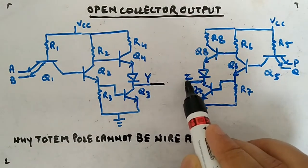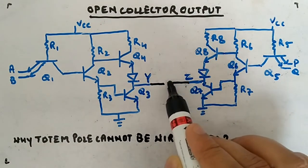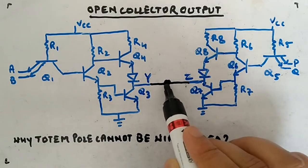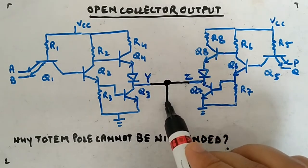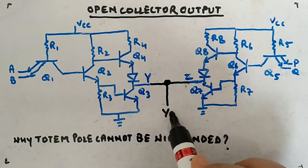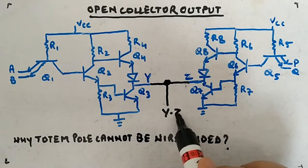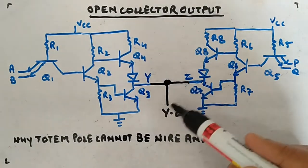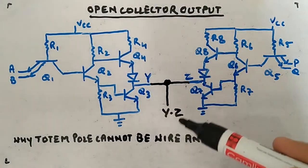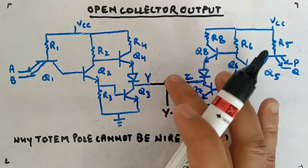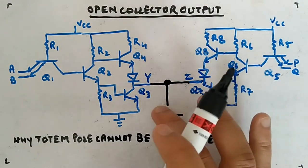The point is not the circuit itself — what I am trying to do is connect these two circuits together and achieve wire-ANDing of Y and Z. I will now tell you why it will not work.